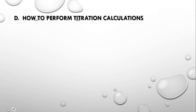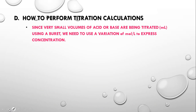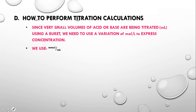For titration calculations, you need to understand that very small volumes of acid or base are being titrated. The burette — the long slender piece of glassware — is marked in milliliters. Since we're dealing with milliliters rather than liters, we use a variation of molarity. Remember molarity is moles per liter, but we'll use millimoles per milliliter to simplify our calculations. A mole per liter is equivalent to millimoles per milliliter.